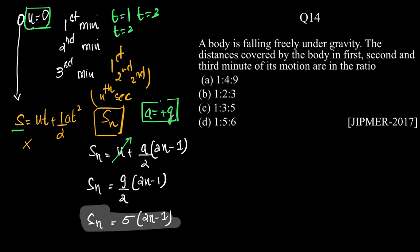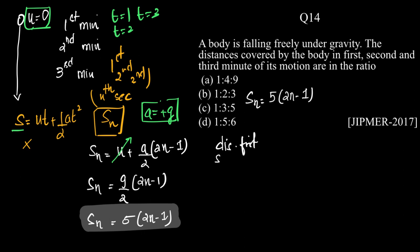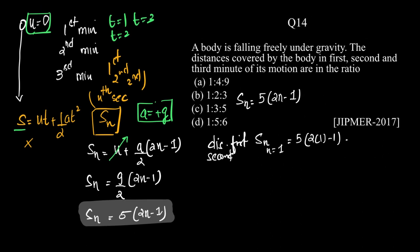The distance covered in the first minute is Sₙ at n = 1, which equals 5(2×1 − 1) = 5 × 1 = 5.